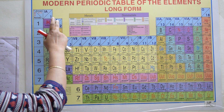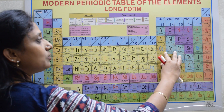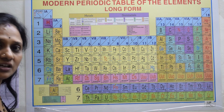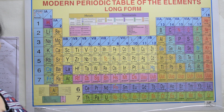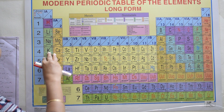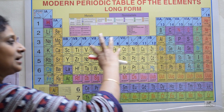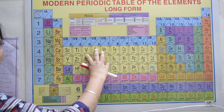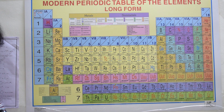The p-block contains several groups including the oxygen family and halogens, which we will deal with one after the other. So s-block contains alkali and alkaline earth metals, p-block contains several element groups, and d-block and f-block contain transition and inner transition elements.